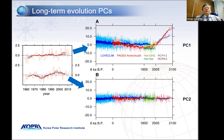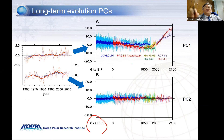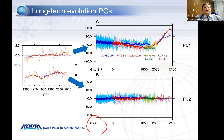We reproduced this long-term evolution of the principal component from the observation, 1958 to 2012, and expanded it to roughly 6,000 years using model results and the datasets shown previously. PC1 shows a hockey stick feature — gradually decreasing with time, and then after anthropogenic influence, it shows a very increasing trend. On the other hand, the second mode shows positive and negative variability with time.